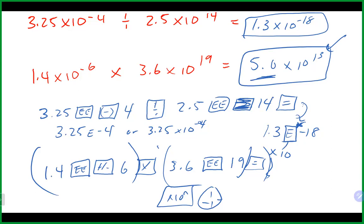When we write a number in scientific notation, all the numbers before the 'times 10' part are significant. This particular number here would have two significant figures, and so would this one. Any of the numbers before the 'times 10' part, when a number is written in scientific notation, are significant.